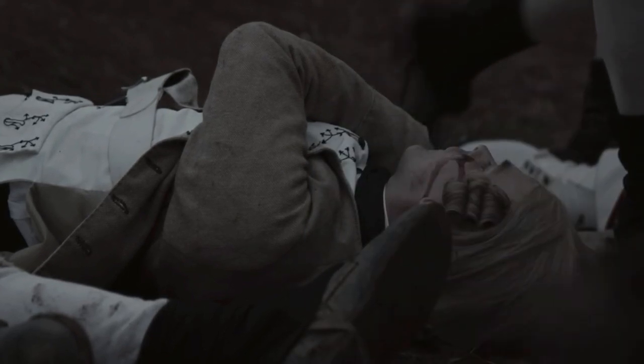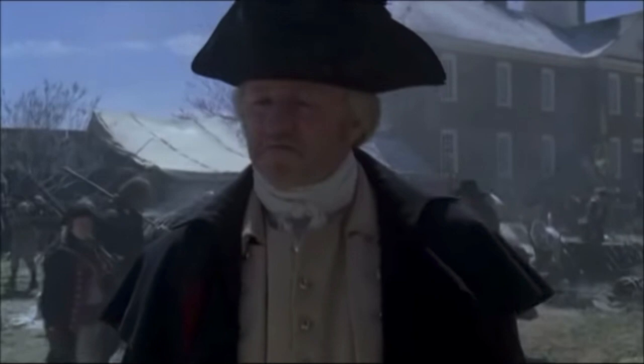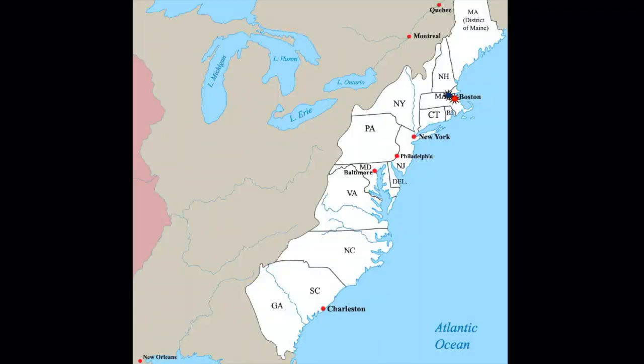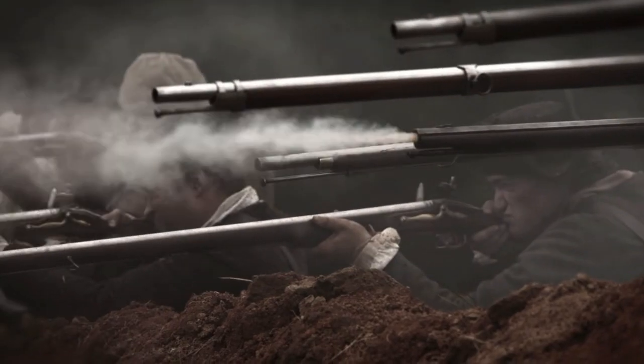However, the disproportionate casualty rate between the two sides lent encouragement to the Americans, and was seen as a moral victory for the revolutionary cause. On July 3rd, Washington assumed command of the Continental Army, but a tough winter saw him struggle to contain the British in Boston while recruiting and training men. Relief came when artillery pieces captured at Fort Ticonderoga arrived in late winter, and with cannon fire raining down on Boston from Dorchester Heights, General Howe realised his position was untenable and ordered a withdrawal to Canada on March 17th 1776.